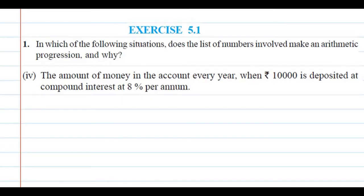Hello students, my name is Khushal Tripathi and I am TGT Mathematics. In this video, we will cover question number 1's fourth part, Exercise 5.1 from Class 10 NCERT. In which of the following situations does the list of numbers involved make an arithmetic progression, and why?